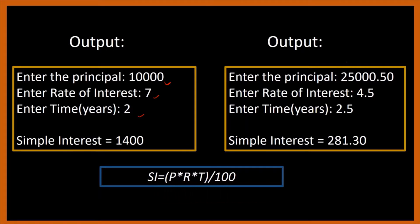In the second output, the principal, rate of interest, and time are float values, not integers like in the first output. So our inputs can be either integers or floats, and accordingly the simple interest can also be a float. We should use float data type for input and output since float can handle both integer and float values. We could also use double, but if float is sufficient we should not use double as it takes more memory space.